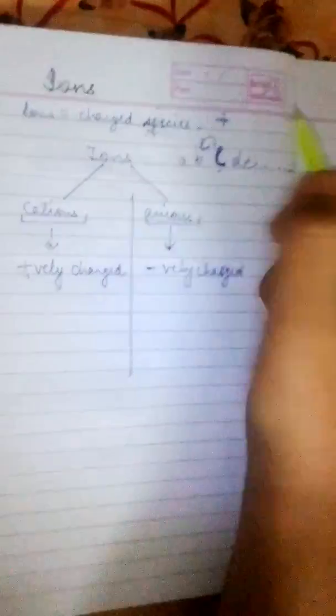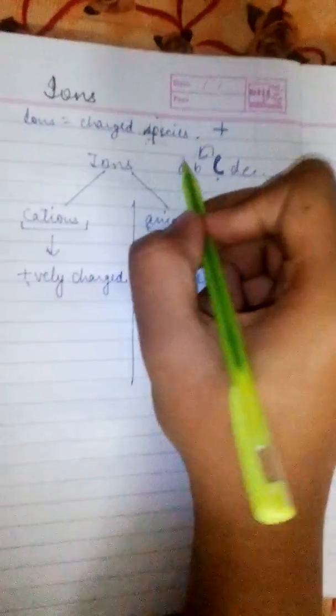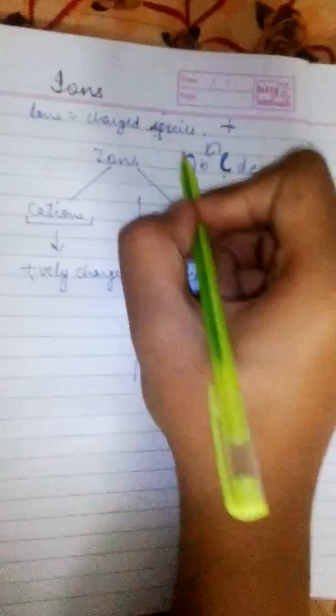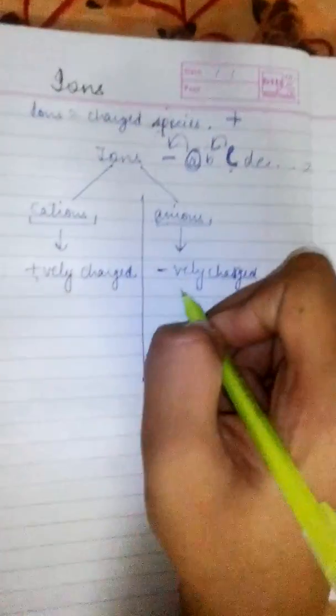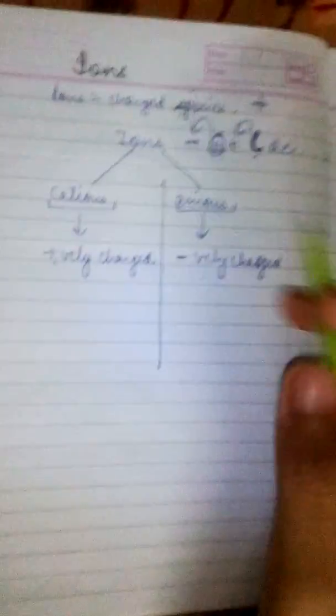So, we have a positive charge. But from A, anions, we cannot move backwards. It's all empty over here. So they are negatively charged. Fine, this one is one way to learn.